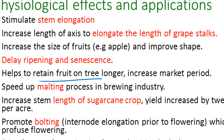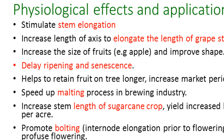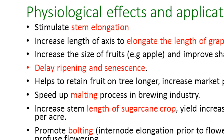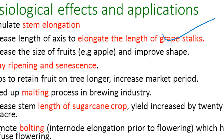Gibberellins also increase the size of fruits — for example, apple — and improve their shape. Most importantly, they delay ripening and senescence of fruits. They help retain the fruit on the tree longer, thereby increasing the market period. This is also related to the elongation of grape stalks discussed earlier.